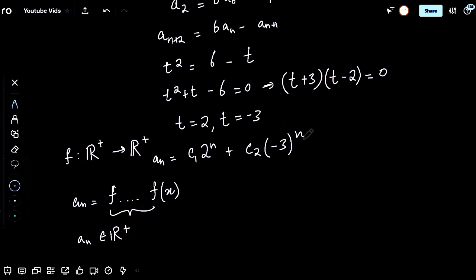But if you notice here, for large values of n, this term can actually become negative, especially for large odd values of n. That means that c_2 must be 0, because otherwise we have a contradiction, that for some sufficiently large odd n, A_n is actually going to be less than 0.